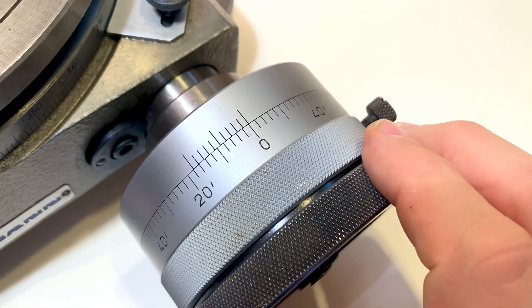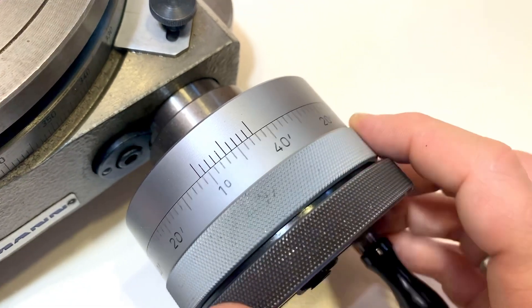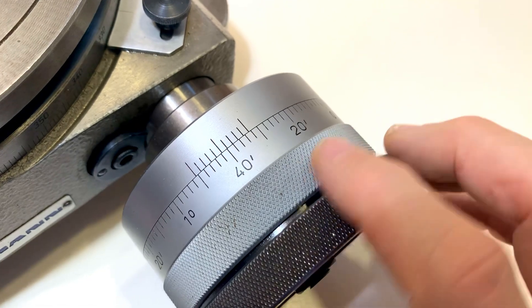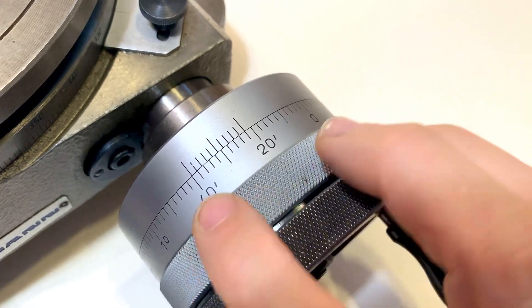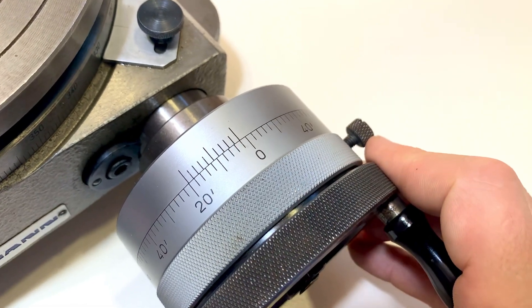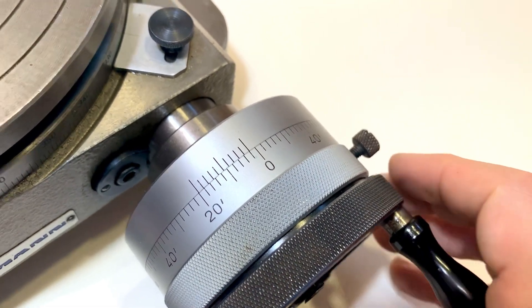So there's a zero, there's a one degree angle with 60 minutes in between, and one graduation here is two minutes.